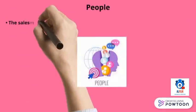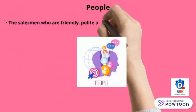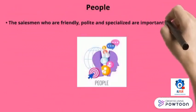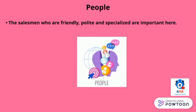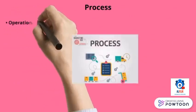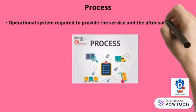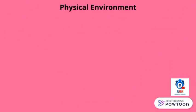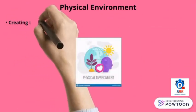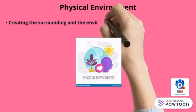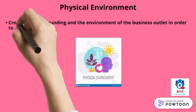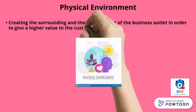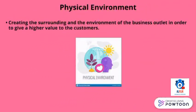People: the salesmen who are friendly, polite, and specialized are important here. Process: the operational system required to provide the service and the after-sale services. Physical environment: creating the surrounding and the environment of the business outlet in order to give a higher value to the customers.